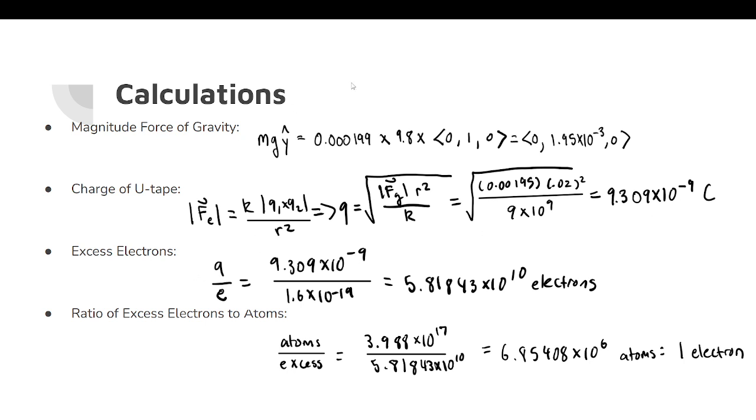In order to get excess electrons, we took the charge divided by the charge of a single electron, and we found 5.81843 times 10 to the 10th electrons. And then in order to get the ratio of excess electrons to atoms, we just took atoms divided by excess electrons, and we got 6.85408 times 10 to the 6 atoms per 1 electron.